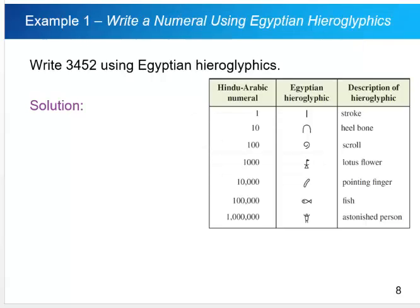In this short lesson we are going to convert between the Egyptian numeration system and the Hindu-Arabic. If we start with the Hindu-Arabic numeral 3452 and we would like to convert it to Egyptian hieroglyphics, we just simply write however many of each place value.